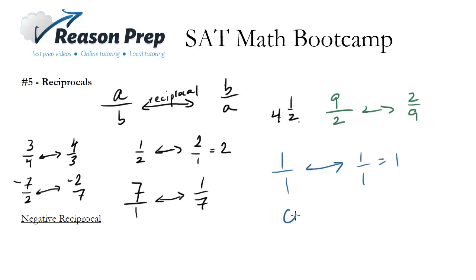What about 0? Well 0 is the same thing as 0 over say 1 or anything, it doesn't really matter, it could be over any number. We flip that, we get 1 over 0, which can't do, it's undefined. So 0 does not have a reciprocal.